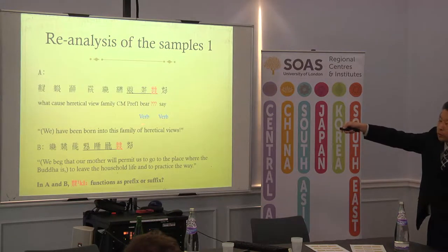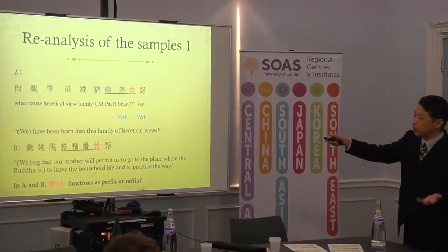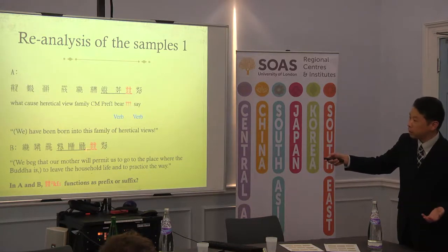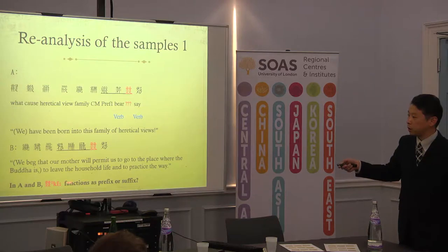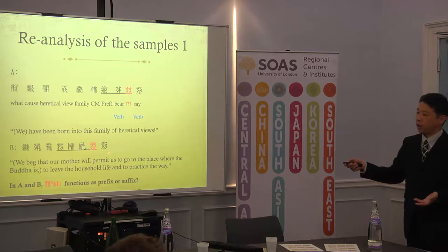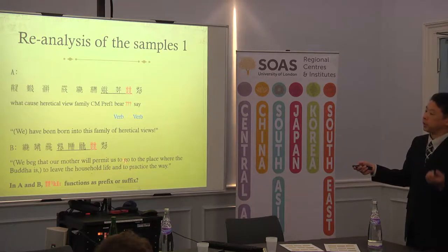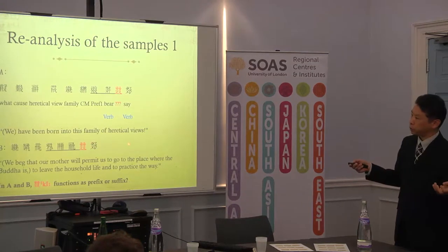Actually, it appears after the verb. But is it a suffix? We cannot decide, because the final character is also a verb. And sentence B is also after the verb. Why did Professor Nishida decide it is a suffix? It's possible, as a prefix of the final verb, I think. In these cases, I cannot agree with him, because we cannot decide if it is a prefix or suffix from these short samples.